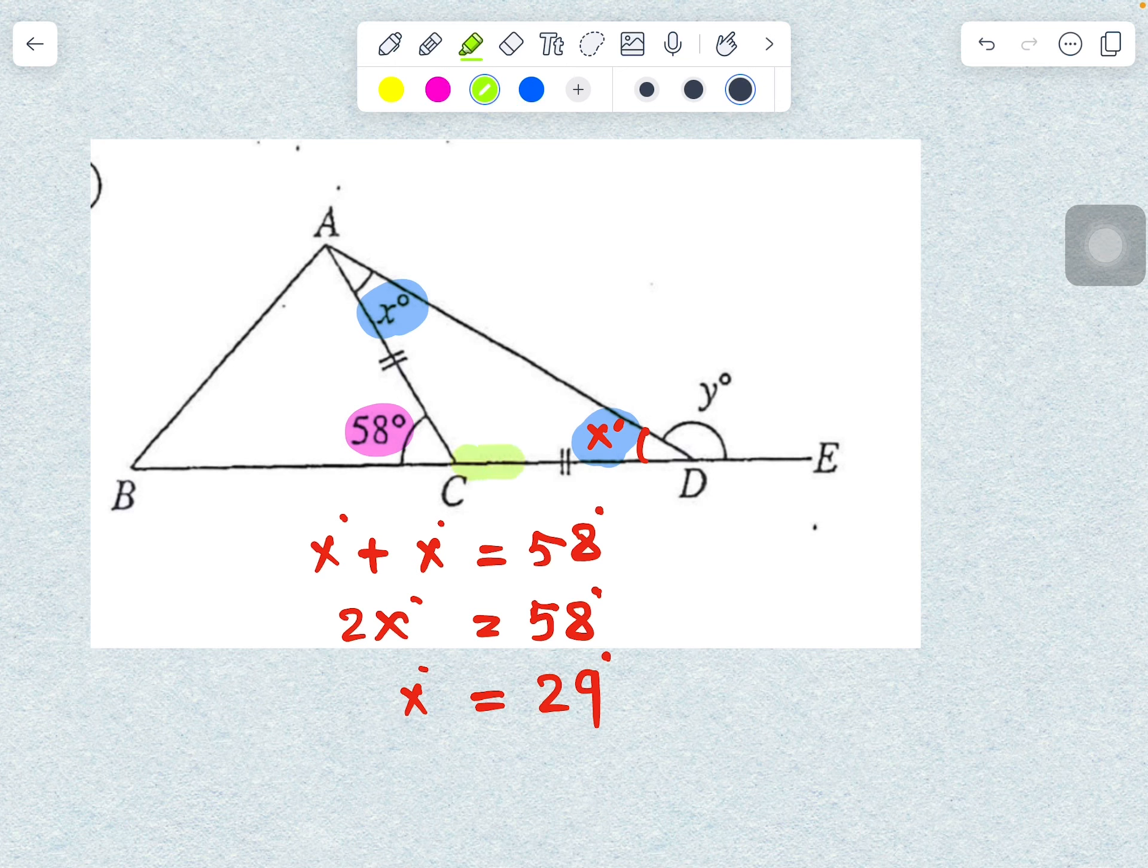Since CD is a straight line, therefore x-degree plus y-degree equals 180-degree.